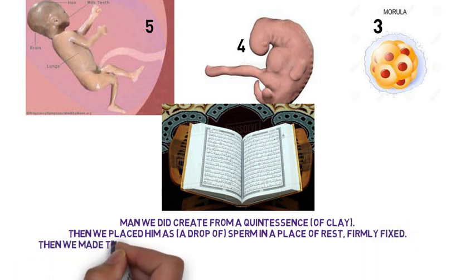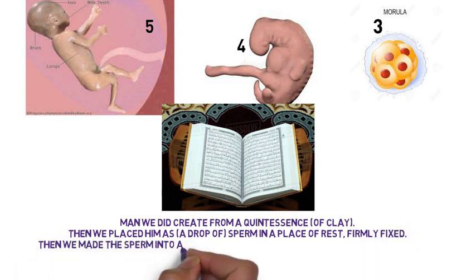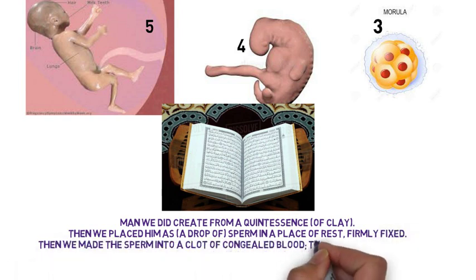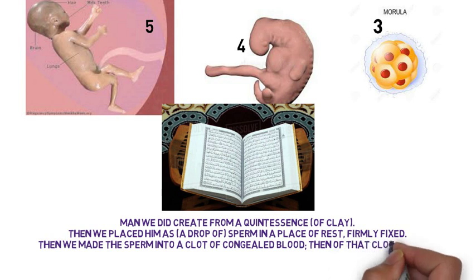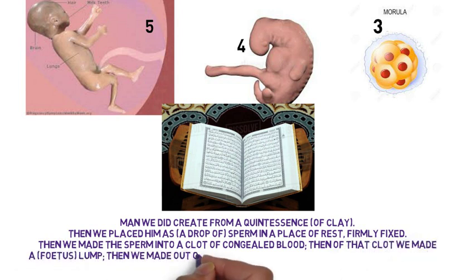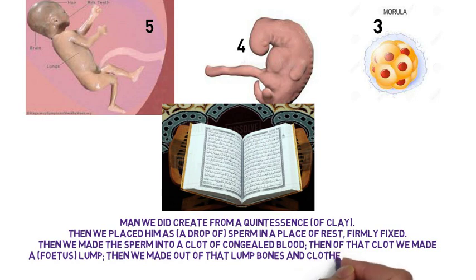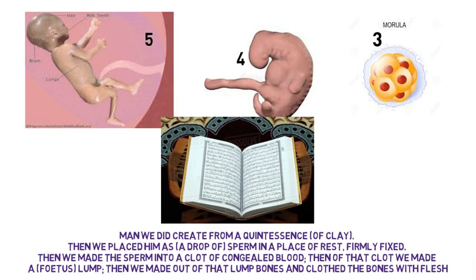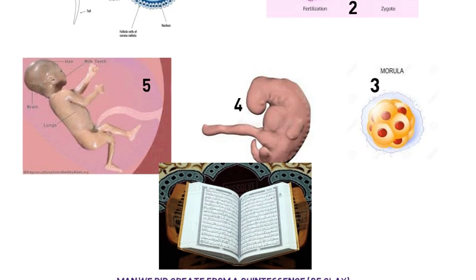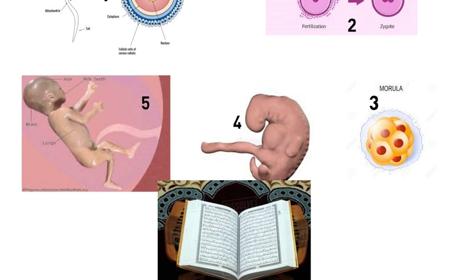'Then we made the sperm into a clot of congealed blood; then of that clot we made a fetus lump; then we made out of that lump bones and clothed the bones with flesh; then we developed out of it another creature. So blessed be Allah, the best to create.'